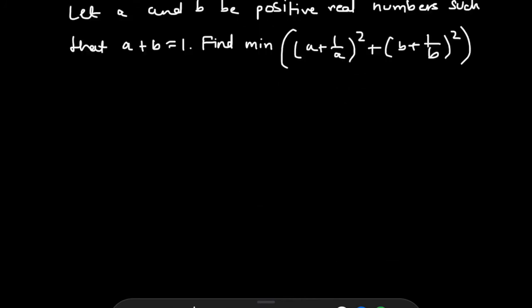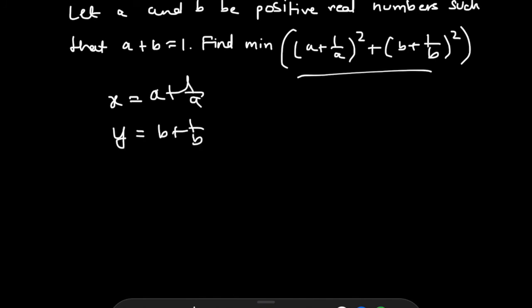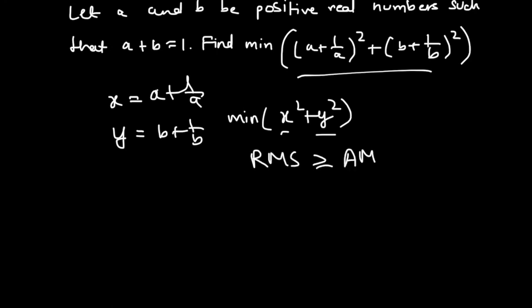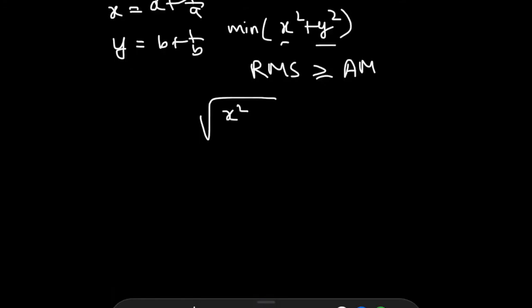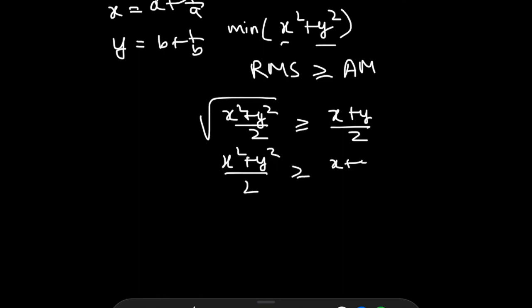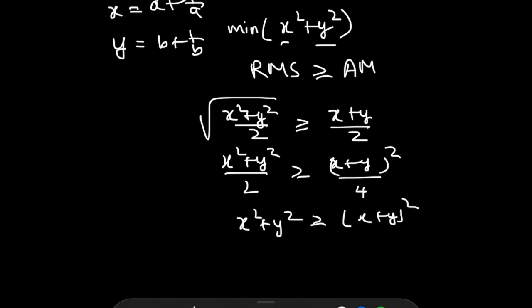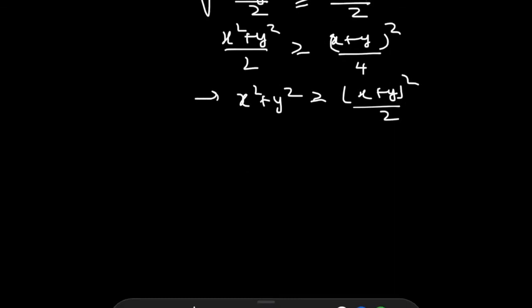The second problem: a and b are positive real numbers with a + b = 1; find the minimum of (a + 1/a)² + (b + 1/b)². Let x = a + 1/a and y = b + 1/b, so we want to minimize x² + y². Using the RMS-AM inequality: √((x² + y²)/2) ≥ (x + y)/2. Squaring both sides and multiplying by 2: x² + y² ≥ (x + y)²/2. So we now want to minimize (x + y)².